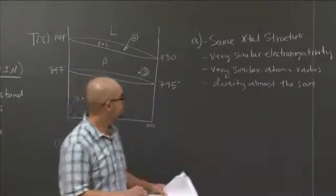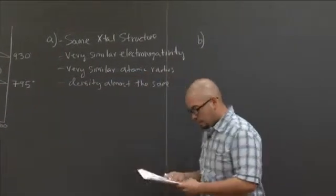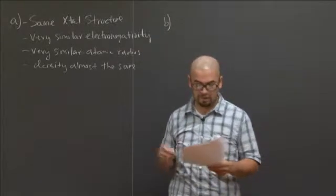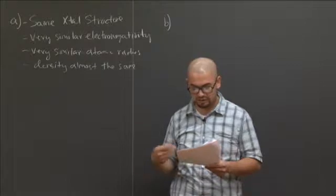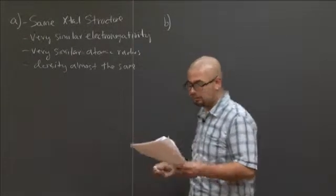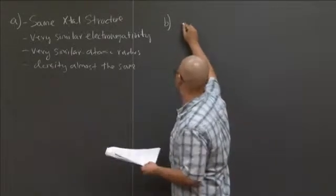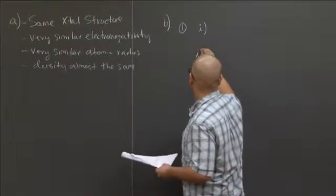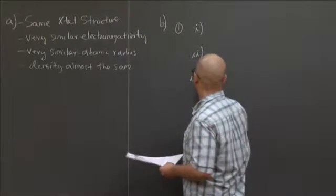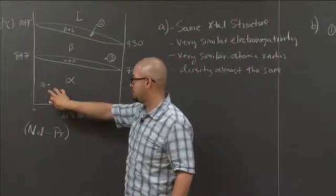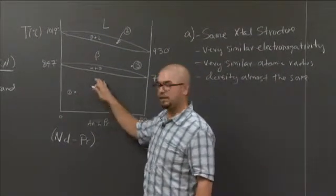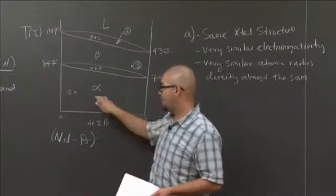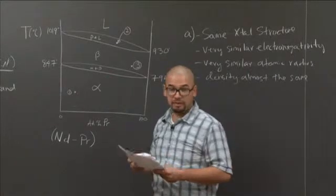Part B asks: at each point, (i) identify all the phases present in equilibrium, (ii) state the composition of each phase, and (iii) calculate the relative amount of all phases present. It asks us to analyze three points on our phase diagram. For point number one, if we look at our phase diagram, we lie exactly where the alpha phase is. So to answer the first part of the problem — identify all the phases present — we only have the alpha phase here.